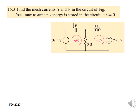Just like the previous video, we will follow the same steps. First of all, this is the circuit given here. No energy is stored at t equals zero, meaning the initial condition is zero. And we have to find the currents I1 and I2.